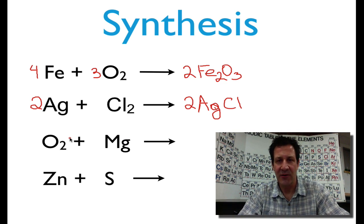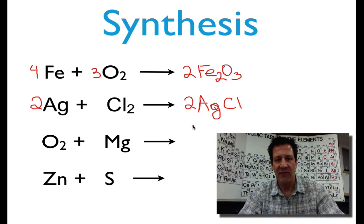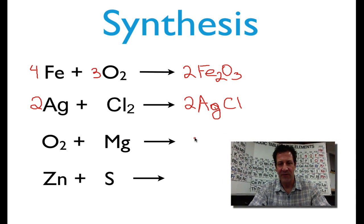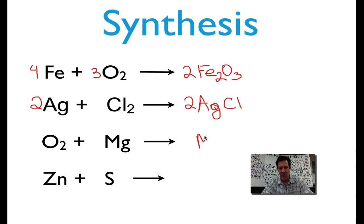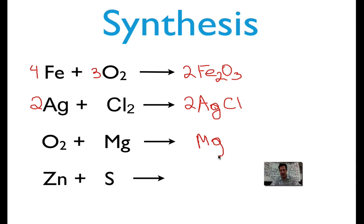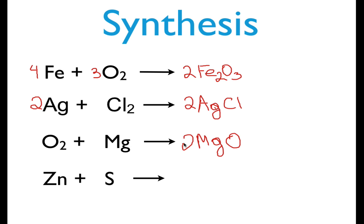We had a nice bright white color — that's a very characteristic color of that reaction. For the synthesis reaction between magnesium and oxygen, we know we're going to have MgO. Magnesium forms a plus two charge and oxygen forms a minus two charge, so the ratio is one to one. We have two oxygens on the reactant side, so we put a coefficient of two on the product side and a coefficient of two in front of magnesium. That equation is balanced.